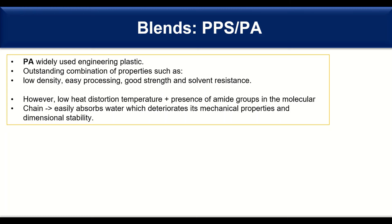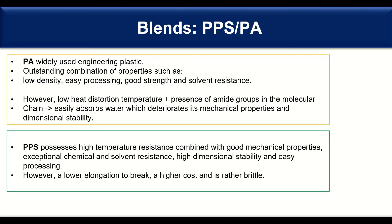Another example is mixing PPS and polyamide. Polyamides are widely used as engineering polymers with an outstanding combination of properties such as low density, easy processing, good strength, and solvent resistance. However, the downside is a lower heat distortion temperature, and the amide groups in the backbone lead to easy water absorption, which lowers mechanical properties and influences dimensional stability. PPS on the other side has outstanding high temperature resistance combined with good mechanical properties, chemical and solvent resistance, as well as high dimensional stability, and easy processing. However, it has low elongation at break, higher costs, and is a rather brittle material.